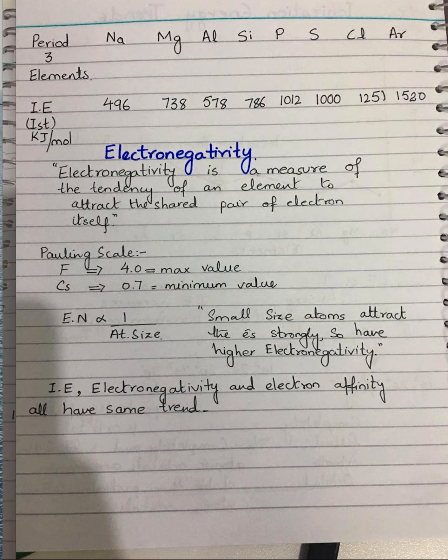Next: electronegativity. Electronegativity is a measure of the tendency of an element to attract the shared pair of electrons towards itself. For example, in a covalent bond, two atoms share an electron pair. But if the two atoms are different, the sharing is unequal — one will have a stronger tendency to attract the electrons.